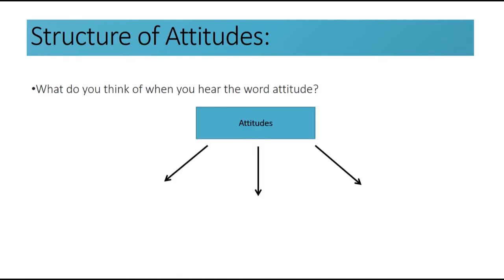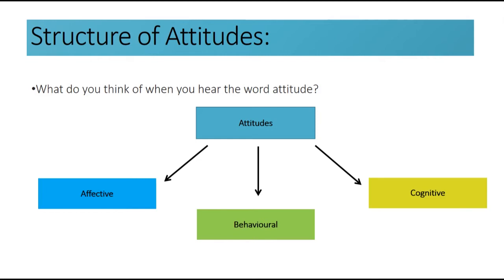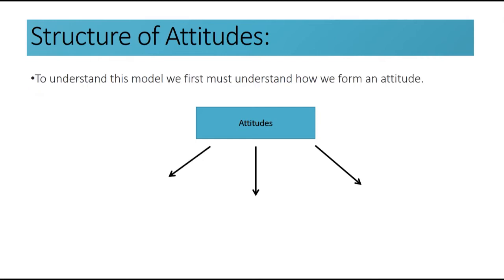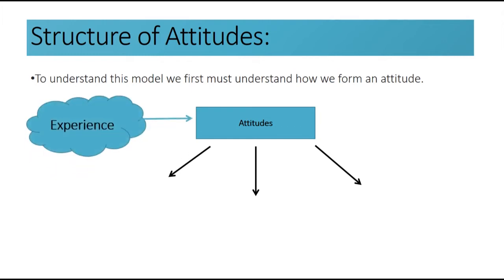Our attitudes can be broken down into three components: affective, behavioral, and cognitive. To understand this model we need to understand how we form attitudes. Attitudes are formed by our experience with particular people, objects, or topics.